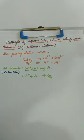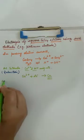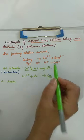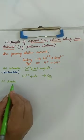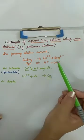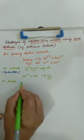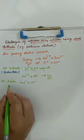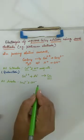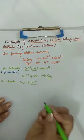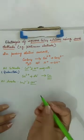Now at anode, both hydroxide and sulfate ions will travel to anode. But according to the discharge potential, out of hydroxide and sulfate, both will reach the anode. But out of both ions, hydroxide ion will get discharged. It depends upon their discharge potential.